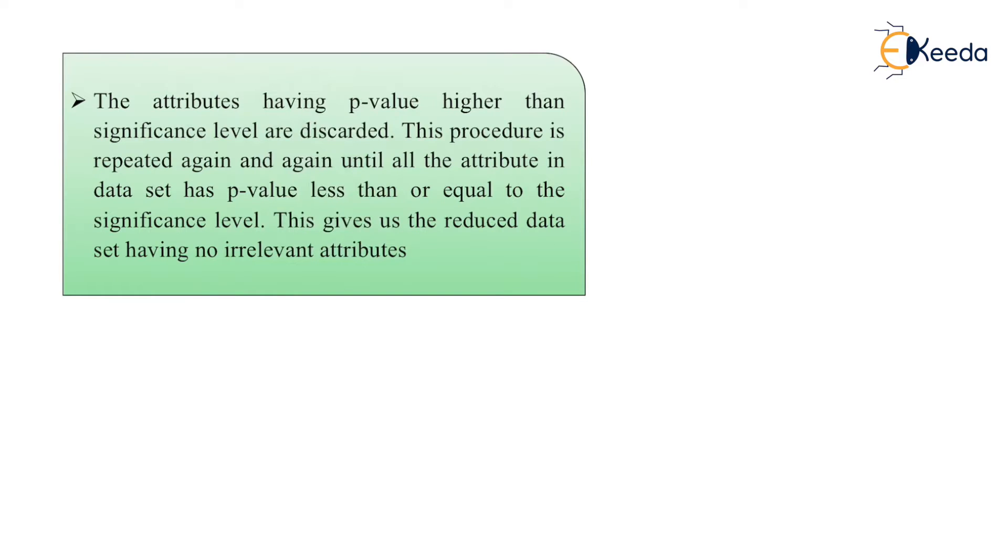The attributes having p-value higher than the significance level are discarded. This process is repeated again and again until all the attributes in the data set have a p-value less than or equal to the significance level. This gives us a reduced data set having no irrelevant attributes.